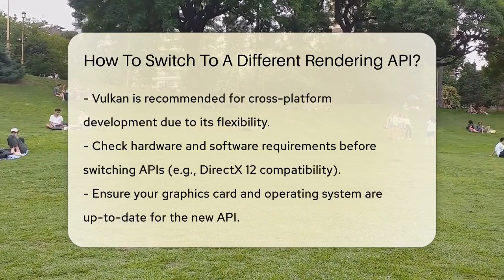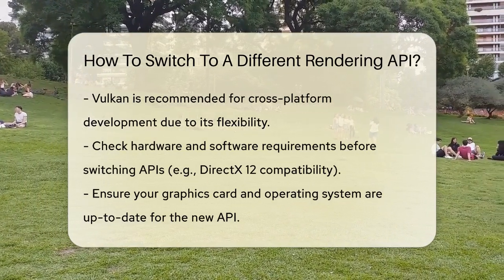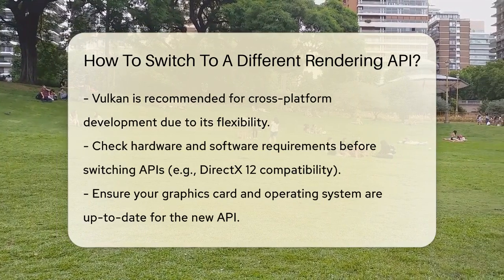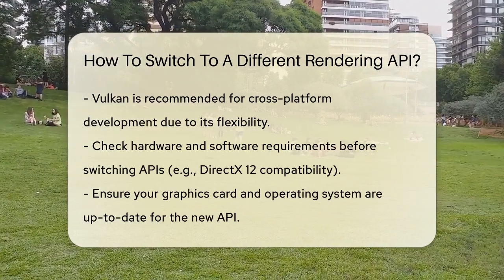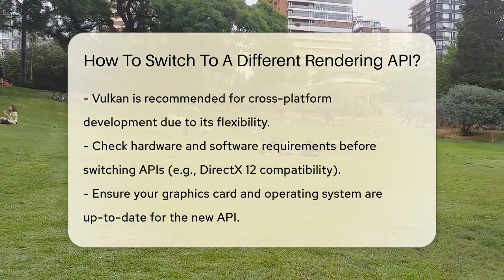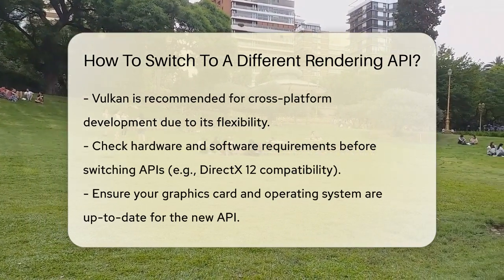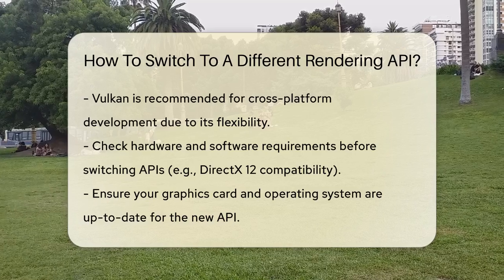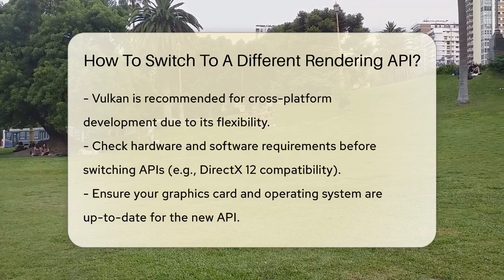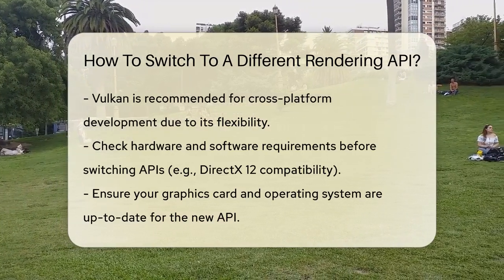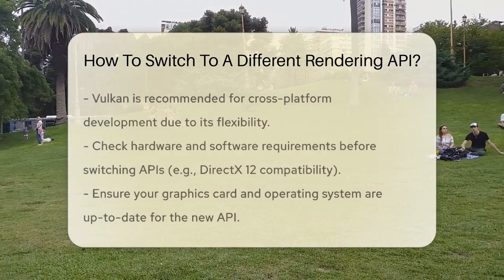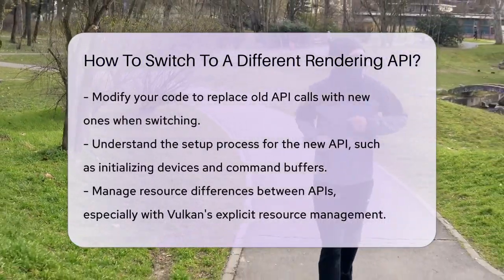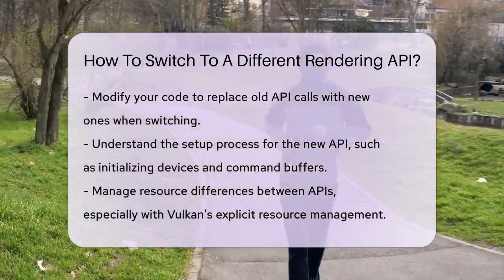Next, you'll need to modify your code to use the new API. This involves replacing the old API calls with the new ones. For example, if you're moving from OpenGL to Vulkan, you'll need to set up Vulkan's device, queues, and command buffers. It's a bit like changing the engine of a car — you need to make sure all the parts fit together correctly.